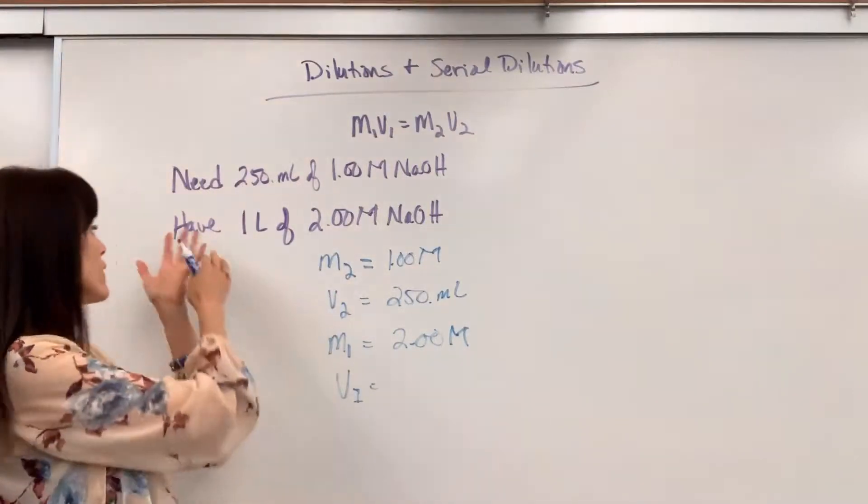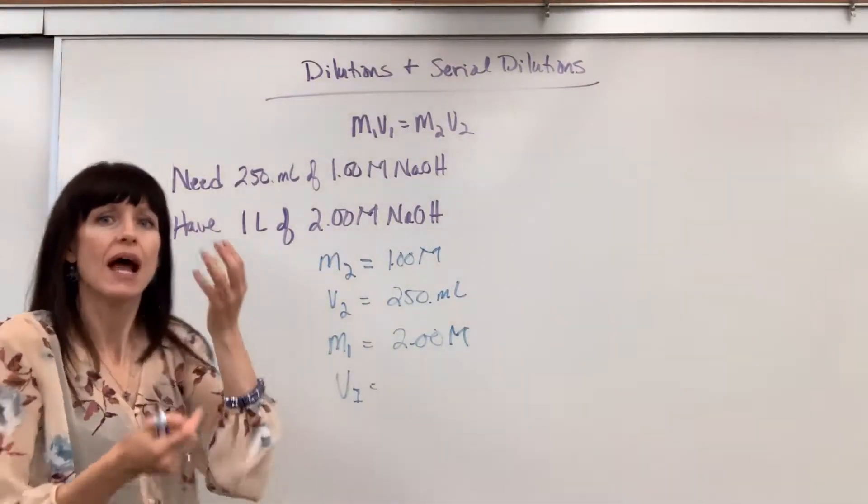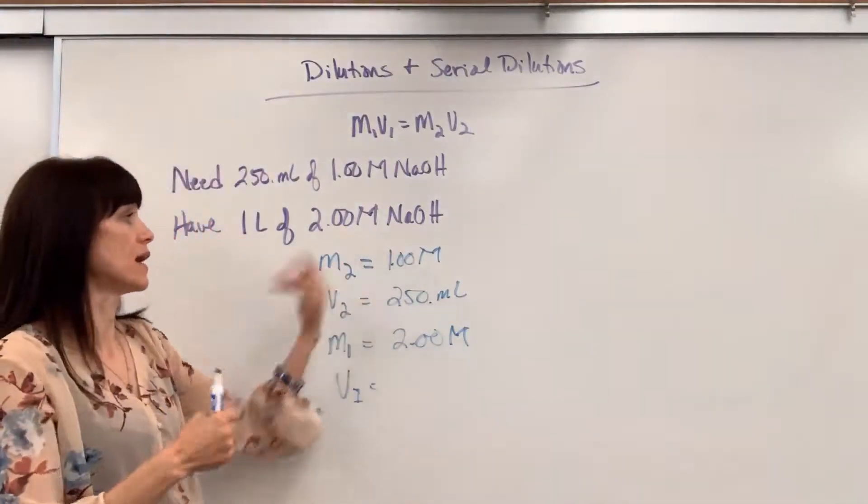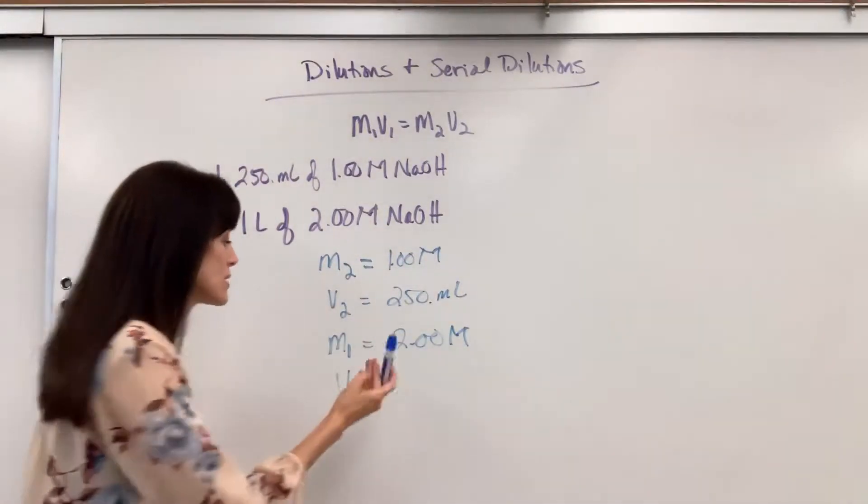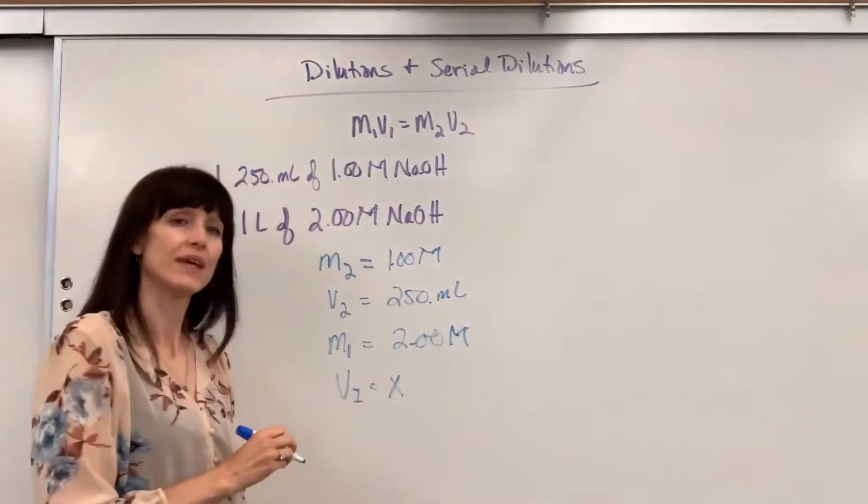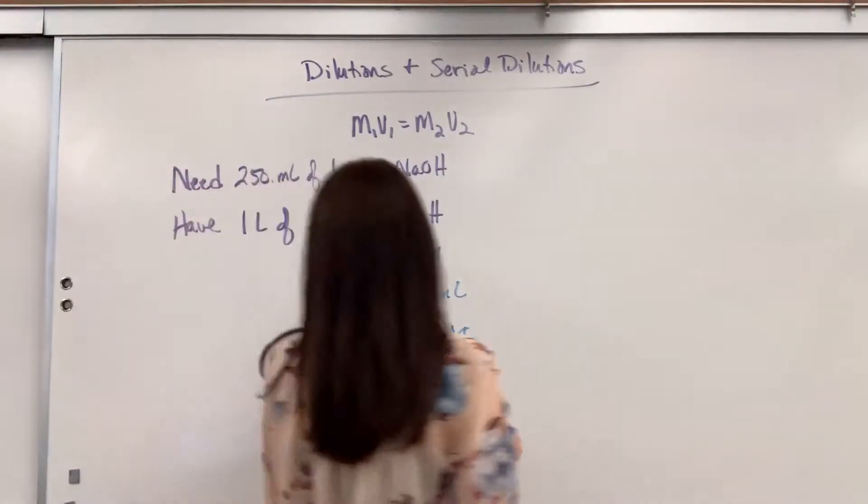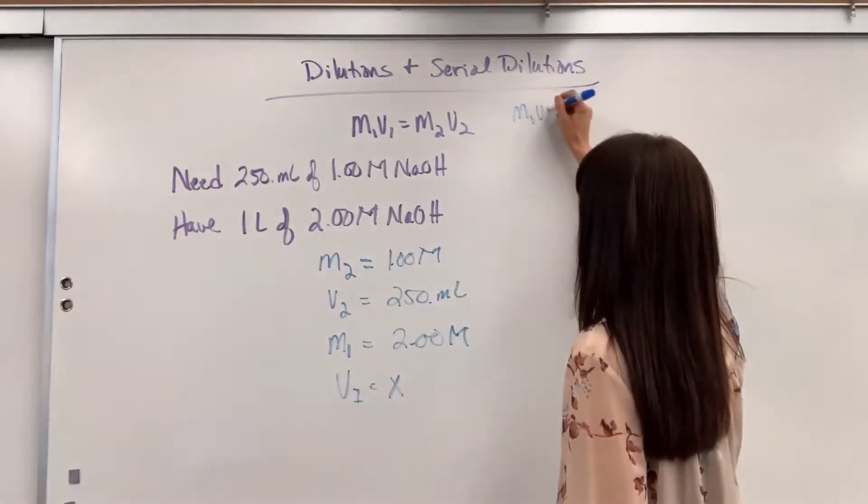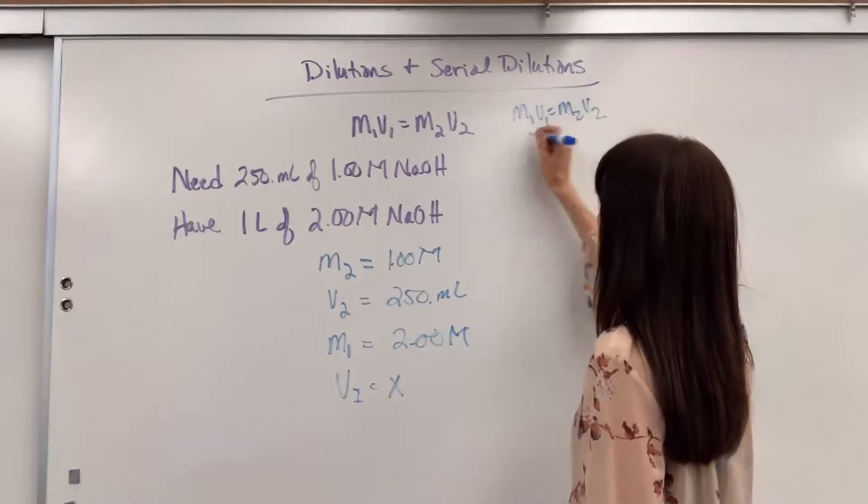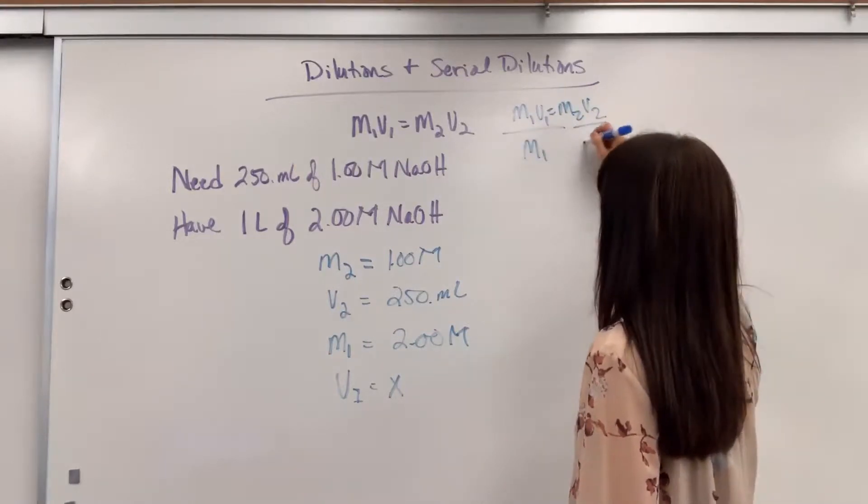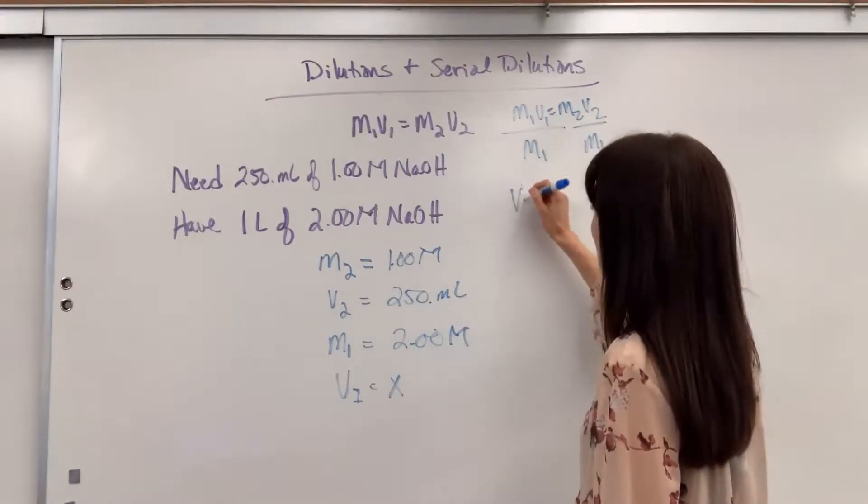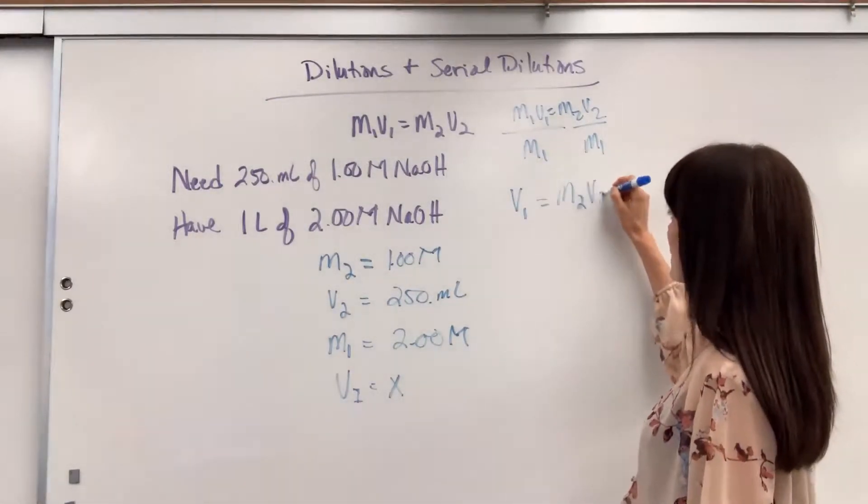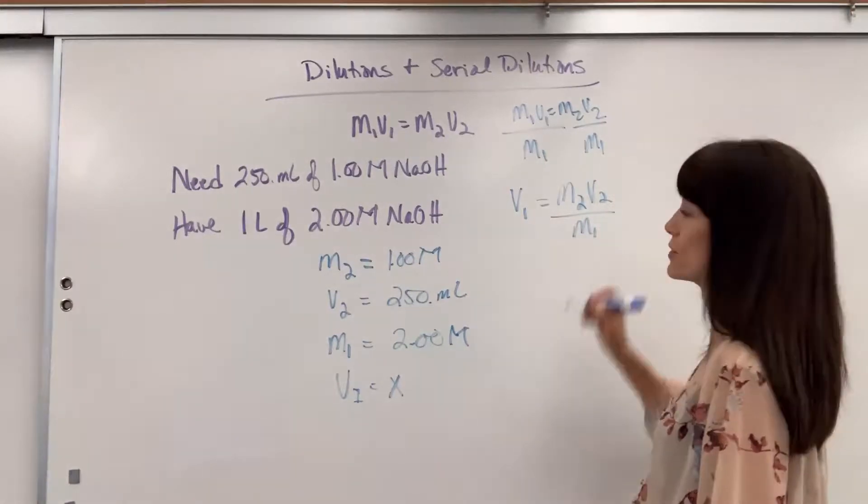I know that I have this whole liter. I don't need that much. How much do I need? What small amount do I need so that when I add water to it, it will end at a one molar solution? So this is our unknown right here. That's what we're looking for. Let's go ahead and solve for V1. So we've got M1V1 equals M2V2. Divide both sides by M1, and that's going to give us V1 equals the final molarity times the final volume divided by that initial molarity.